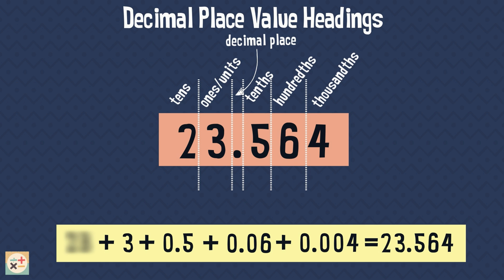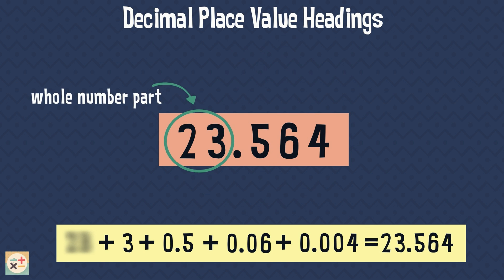In fact, we can break a decimal number down into parts. The first part is the whole number part, followed by the decimal point. The digits after the decimal point make up the fractional part of the number.